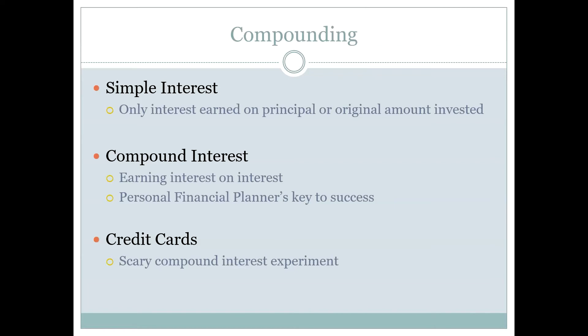I haven't seen a simple interest contract in a long time. What happens now is compound interest — where interest is earned on interest on interest, and so on. Compound interest is one of the most powerful tools in finance; it's the most powerful moneymaker we know of. When we get to the investment section of the class, we'll look at the power of compound interest over a huge amount of time.